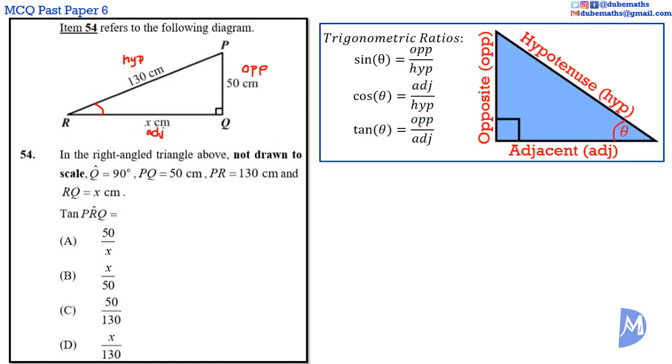Tan theta is equal to opposite over adjacent. Therefore, tan of angle PRQ is equal to opposite 50 centimeters over adjacent X. 50 over X. The answer is A.